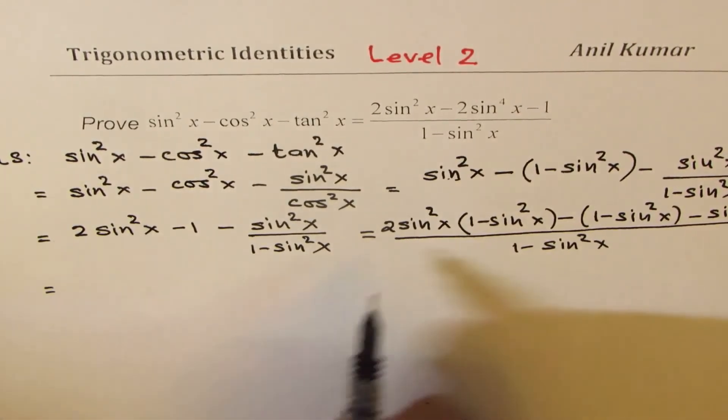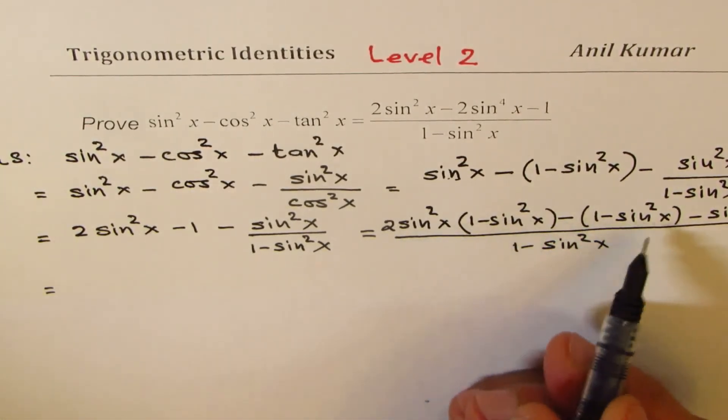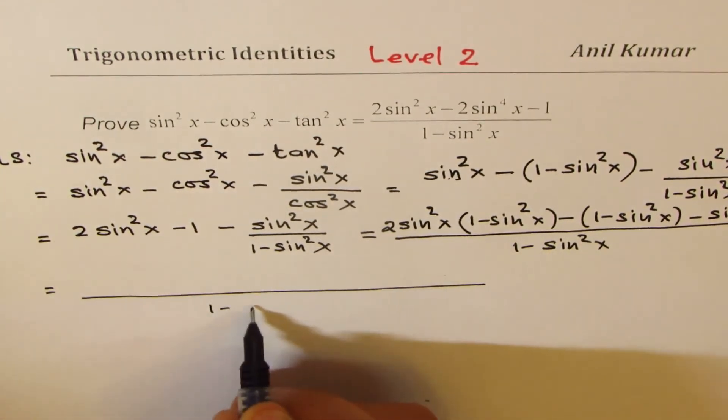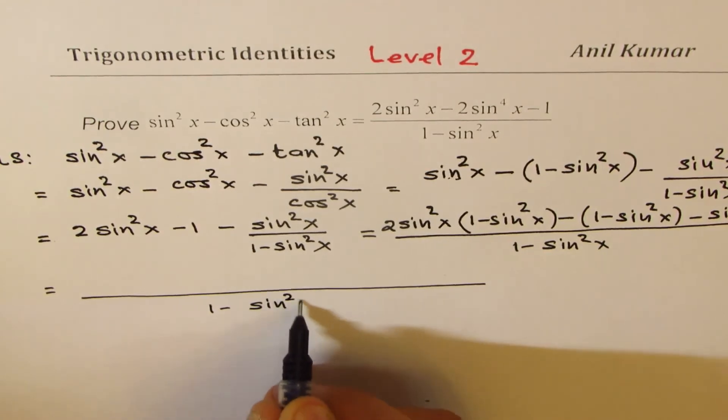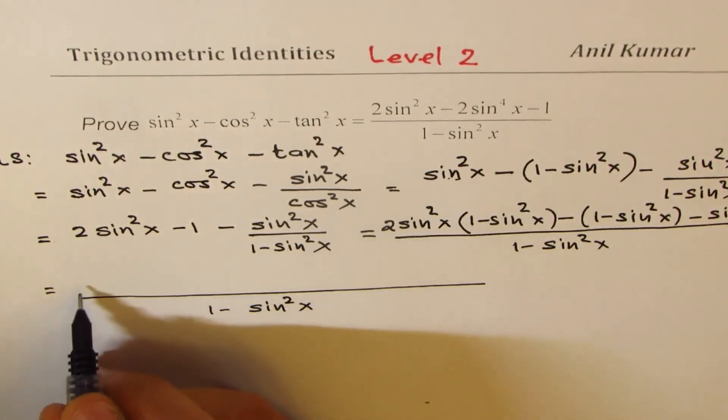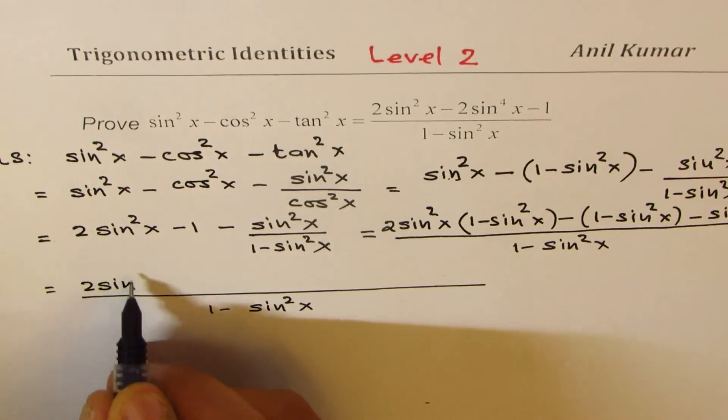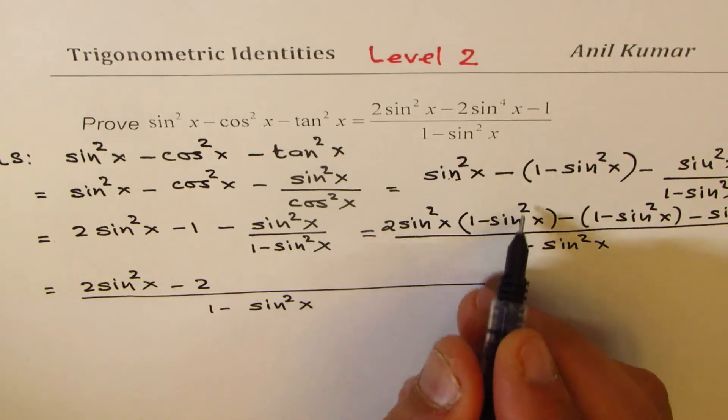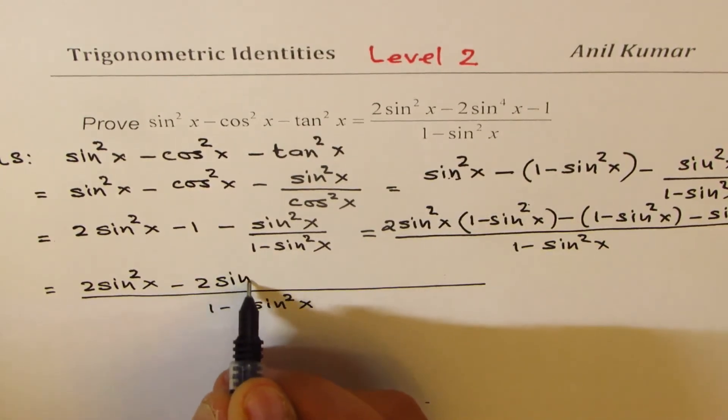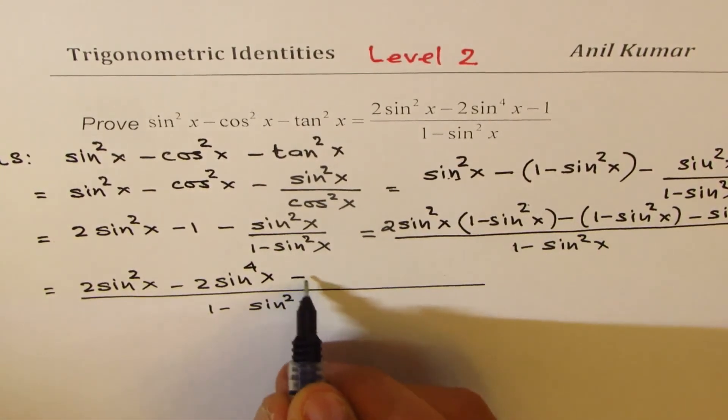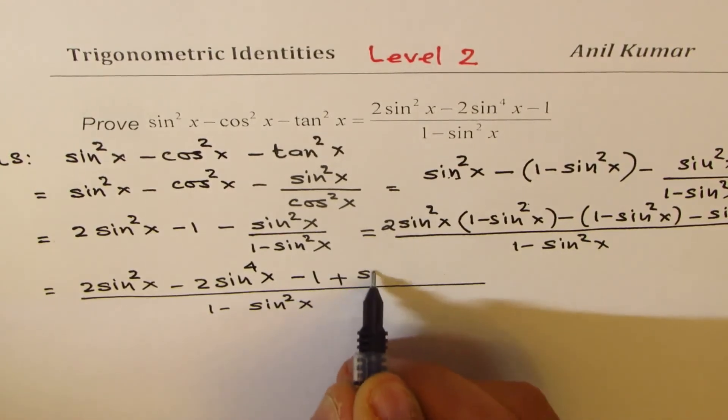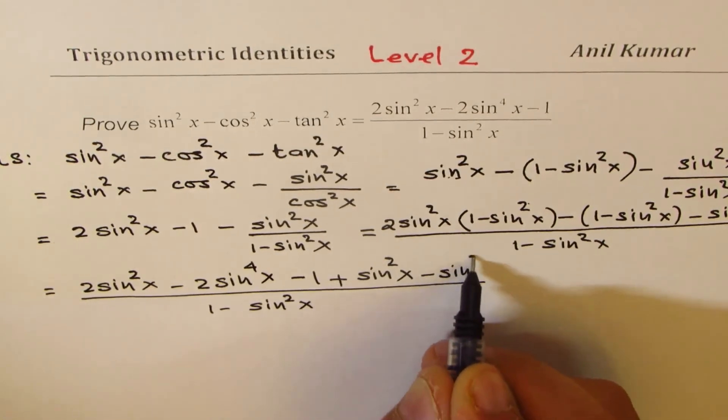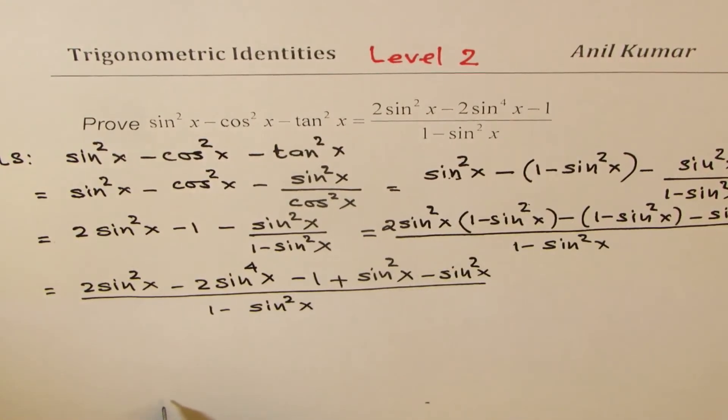So now let us open these and simplify. We have 1 - sin² x in the denominator. So when you open, you get 2 times sin² x minus 2 times sin⁴ x, and here we have minus 1 plus sin² x, and then we have minus sin² x.